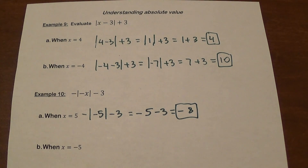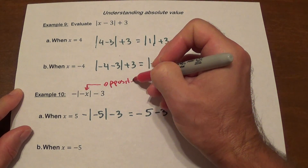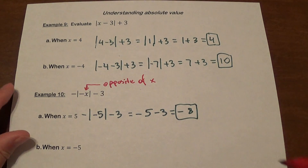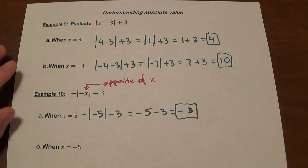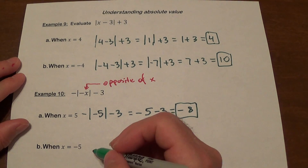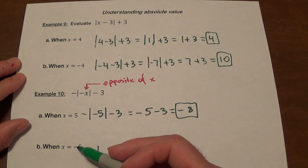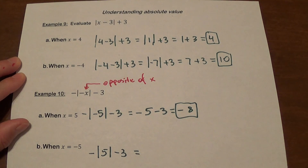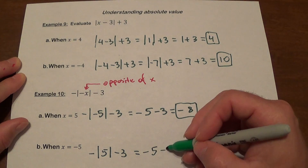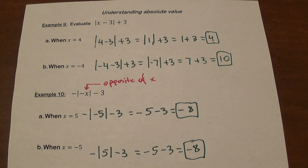When we see negative x, that means the opposite of x — whatever x is, negative x is its opposite. Now for x equals negative 5: negative x is the opposite of negative 5, which is 5. We still keep the negative in front: the absolute value of 5 is 5, the negative in front makes it negative 5, still minus 3, and we actually end up getting the same answer of negative 8. This is how it works, and I hope it's helpful.